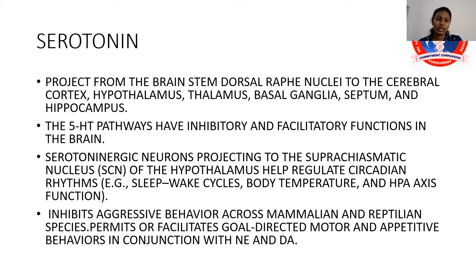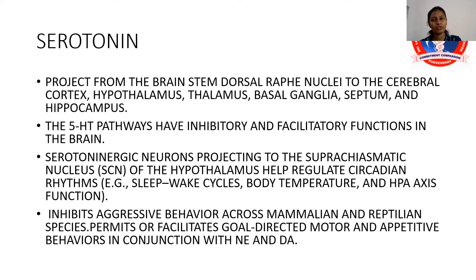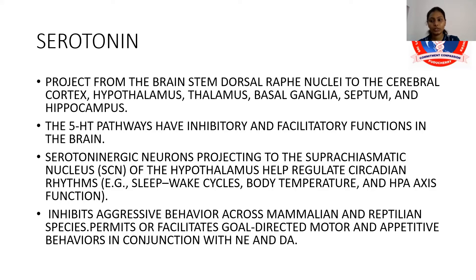Serotonin projects from the brainstem dorsal raphe nuclei to the cerebral cortex, hypothalamus, thalamus, basal ganglia, septum, and hippocampus. The 5-HT pathways have inhibitory and facilitatory functions in the brain. Serotonin neurons projecting to the suprachiasmatic nucleus of the hypothalamus help regulate circadian rhythms such as the sleep-wake cycle, body temperature, and hypothalamic-pituitary axis function.